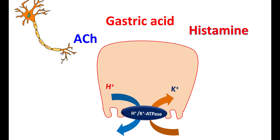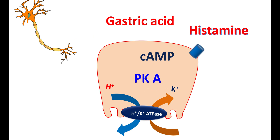The second type of stimulus for gastric acid secretion is through histamine. Histamine acts as a local mediator and increases gastric acid secretion by acting on histamine H2 receptors. When histamine binds to these receptors, it stimulates the adenylyl cyclase system, increasing the production of cyclic AMP. Cyclic AMP activates protein kinase A — phosphorylating enzymes responsible for activating many targets, including the proton pump, resulting in increased gastric acid secretion.